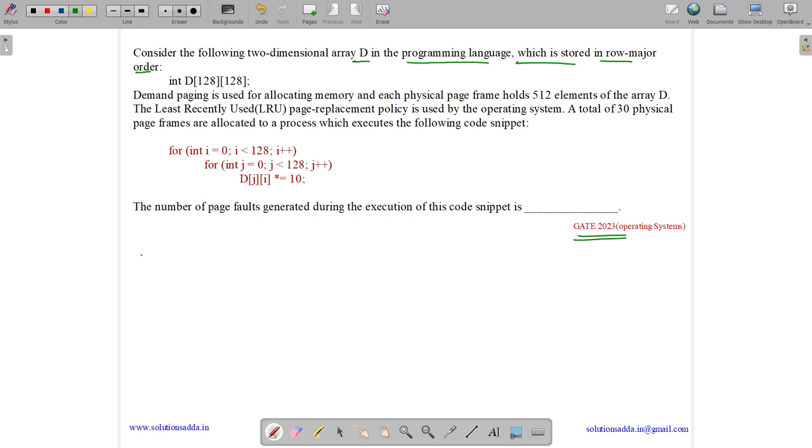We have an array of size 128 by 128. The indexing is from 0 to 127 in both axes. The name of the array is D.